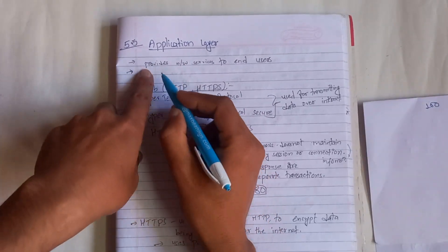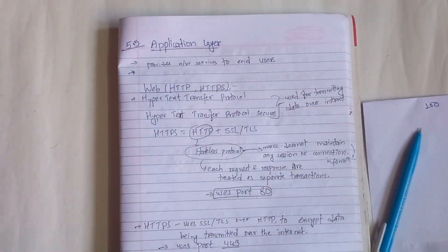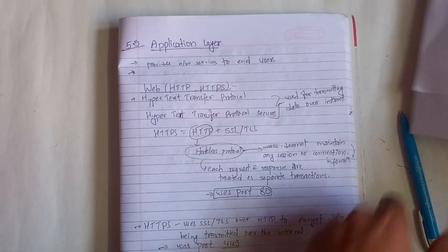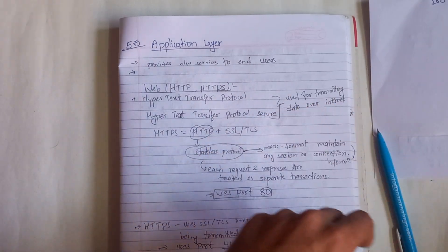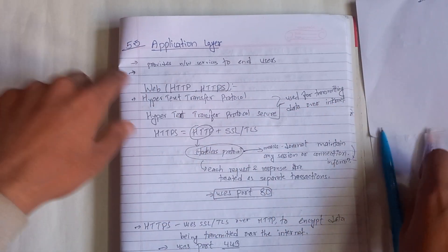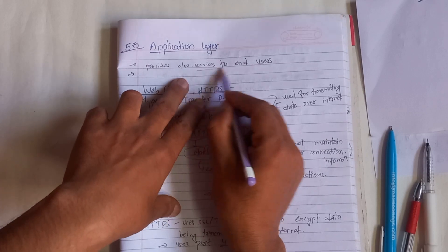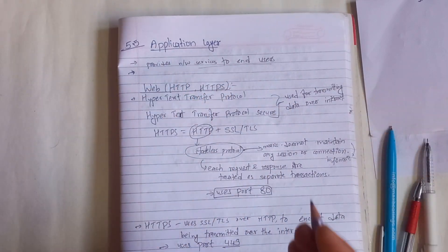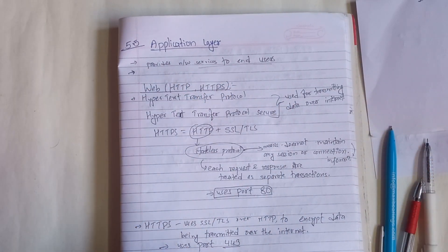In section 5.5, we have to make an application layer. What we can do is we can get a lot of information. It provides network service to end users — end users like the real service provides layer.